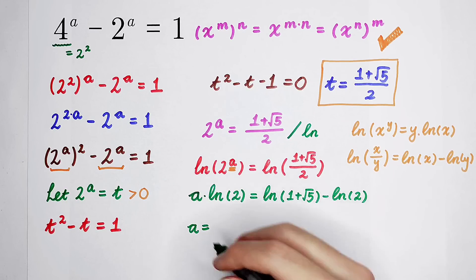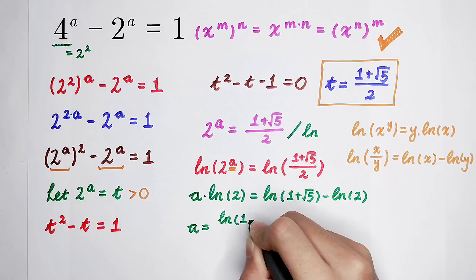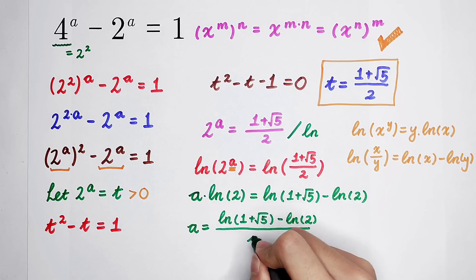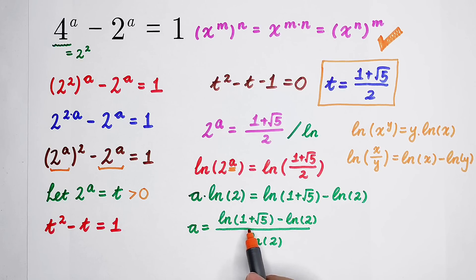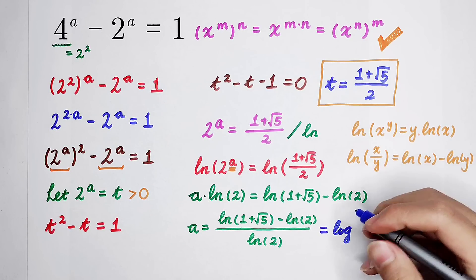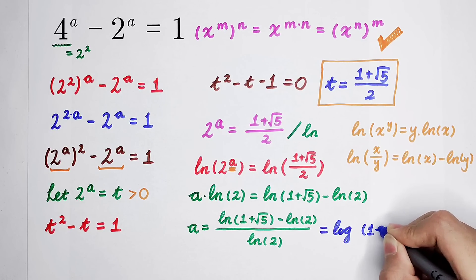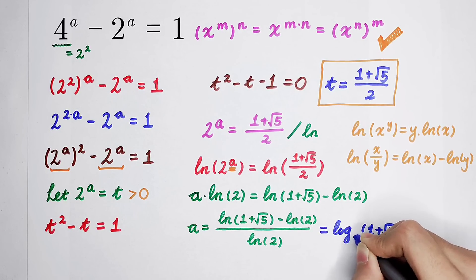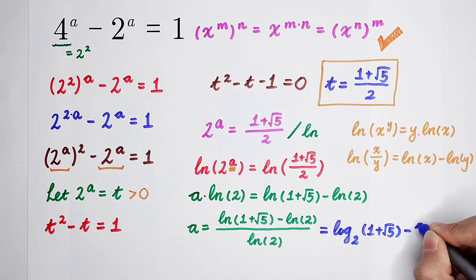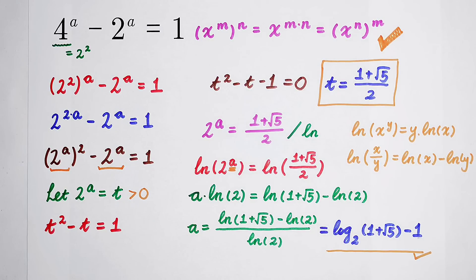Divide both sides by the natural log of 2 — which cannot be 0. The natural log of 1 plus square root of 5, divided by the natural log of 2, can be written as log base 2 of (1 plus square root of 5). Then minus the natural log of 2 divided by the natural log of 2 equals 1. So the answer is a equals log base 2 of (1 plus square root of 5), minus 1. Subscribe for more videos — bye-bye!